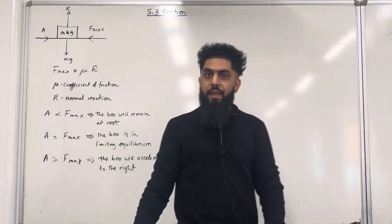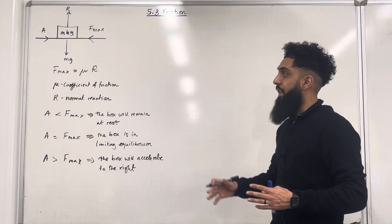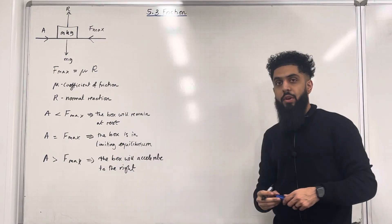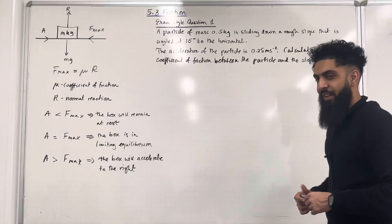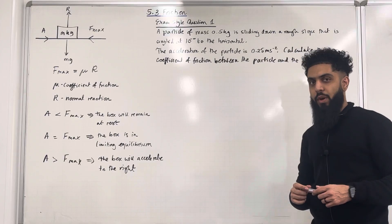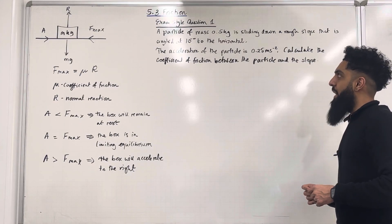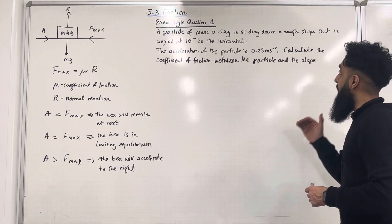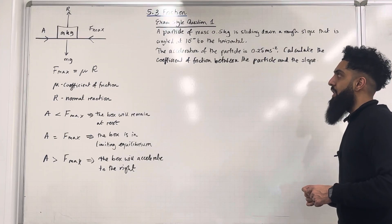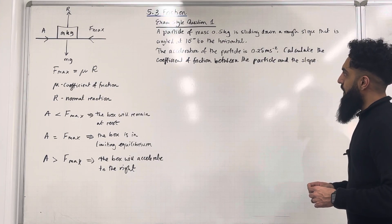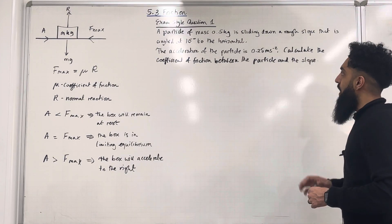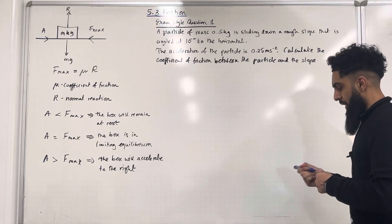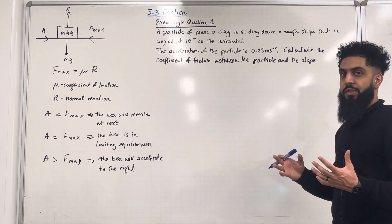Those are the important facts of this particular section. Now I'm going to go through two exam-style questions. Here is exam-style question one: A particle of mass 0.5 kg is sliding down a rough slope angled at 15 degrees to the horizontal. The acceleration of the particle is 0.25 metres per second squared. Calculate the coefficient of friction between the particle and the slope. I'm going to start by drawing a force diagram.